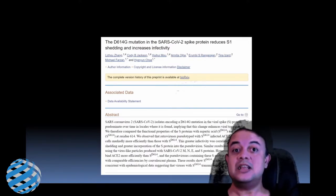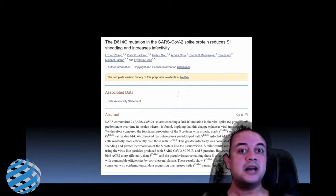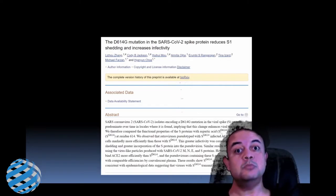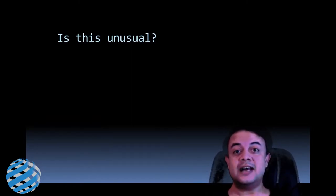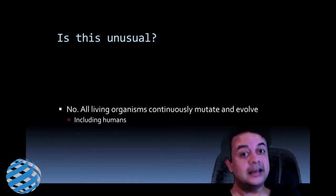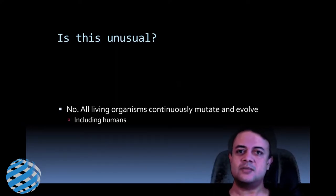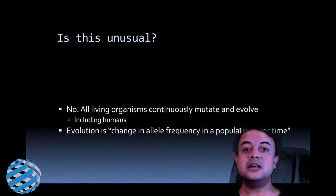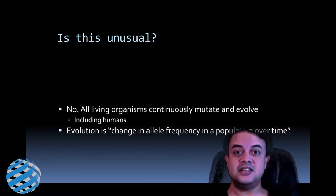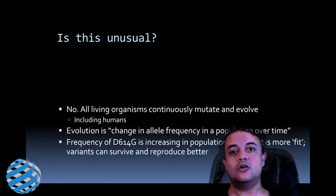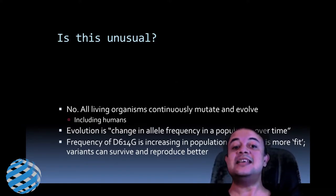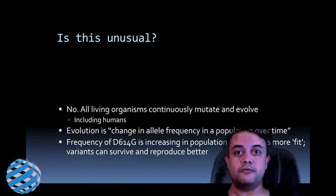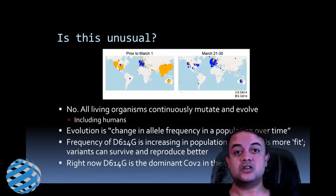In real-life terms, the implication is that it increases infectivity — the ability to spread from person to person has increased because of this mutation. Is it unusual for a virus to mutate? No — all living organisms continuously mutate and evolve, including human beings. Any living organism that is replicating is prone to replication errors, and because of these errors mutants are formed. Natural selection occurs: evolution is nothing but a change in allele frequency in the population over time. The frequency of d614g is increasing because it is more fit from the viral point of view.